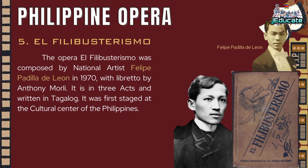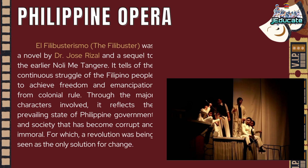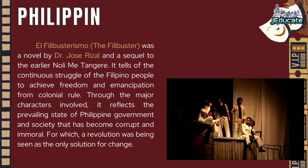Number 5: El Filibusterismo. The opera El Filibusterismo was composed by national artist Felipe Padilla de Leon in 1970, with libretto by Anthony Morley. It is in three acts and written in Tagalog. It was first staged at the Cultural Center of the Philippines. El Filibusterismo is a novel by Dr. Jose Rizal and a sequel to Noli Me Tangere. It tells of the continuous struggle of the Filipino people to achieve freedom and emancipation from colonial rule. It reflects the prevailing state of Philippine government and society that has become corrupt and immoral, for which a revolution was seen as the only solution for change.